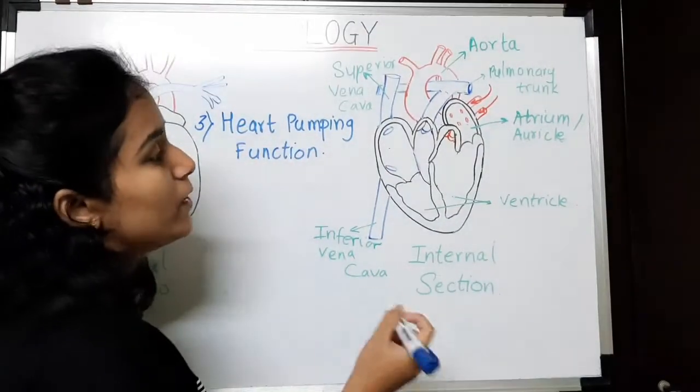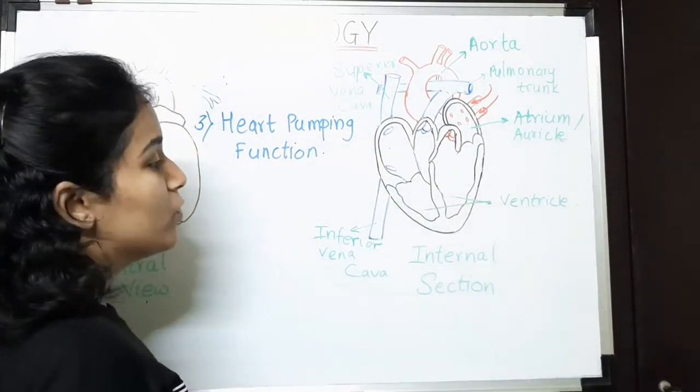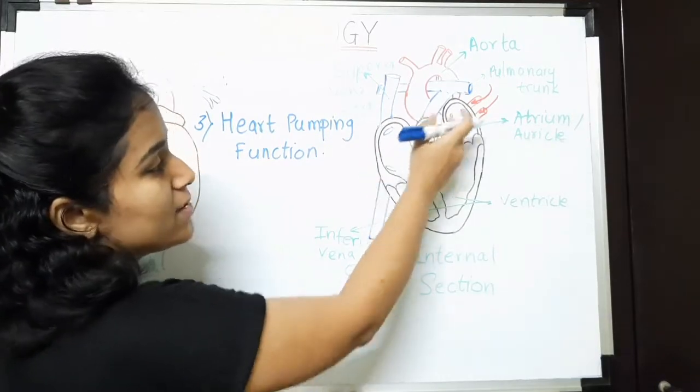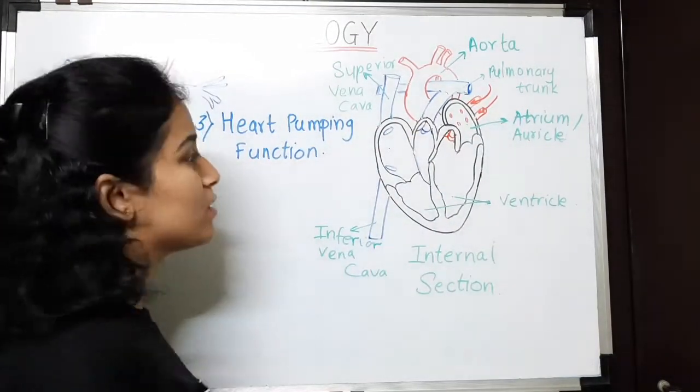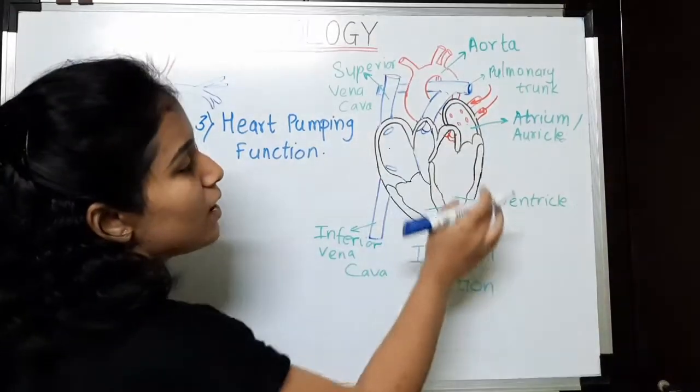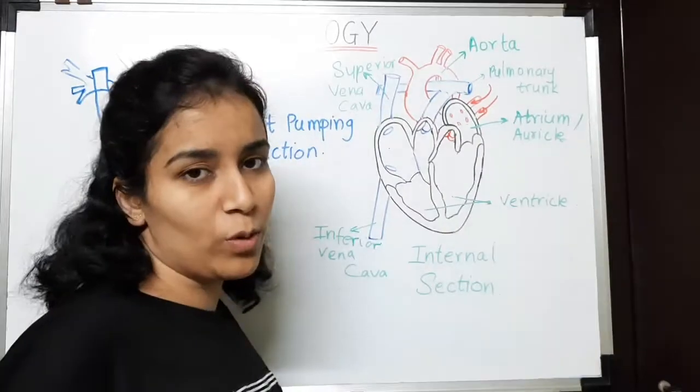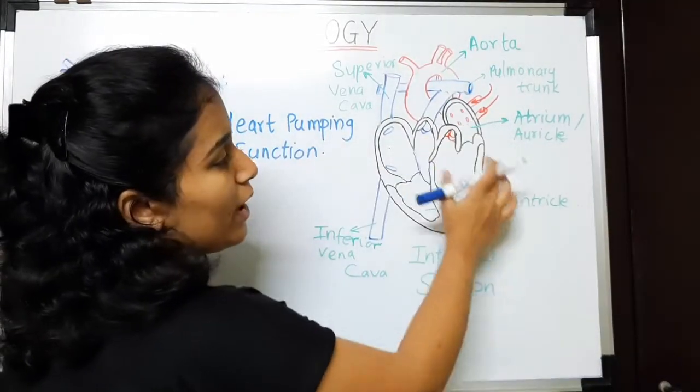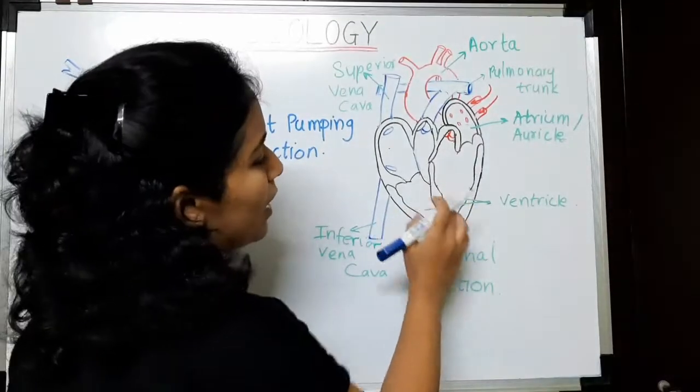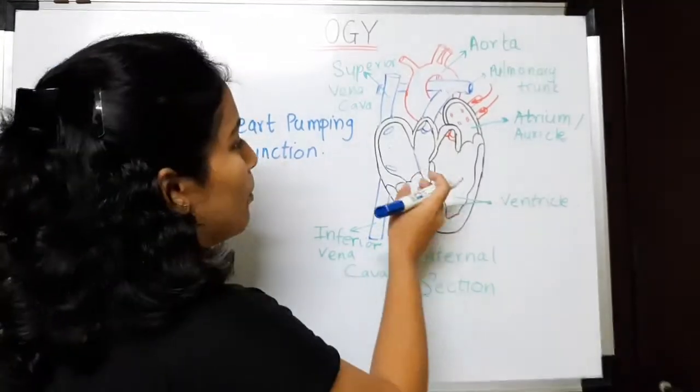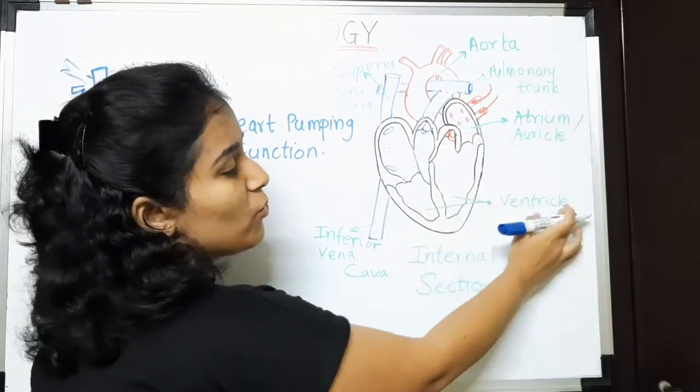So, let me introduce all the terms included over here. As I said, our heart is divided into four chambers or four compartments. So, the upper compartments are a bit smaller than the below ones and these both are known as atrium or auricle. The below ones are a bit larger in size compared with the above ones and these both are known as ventricles.